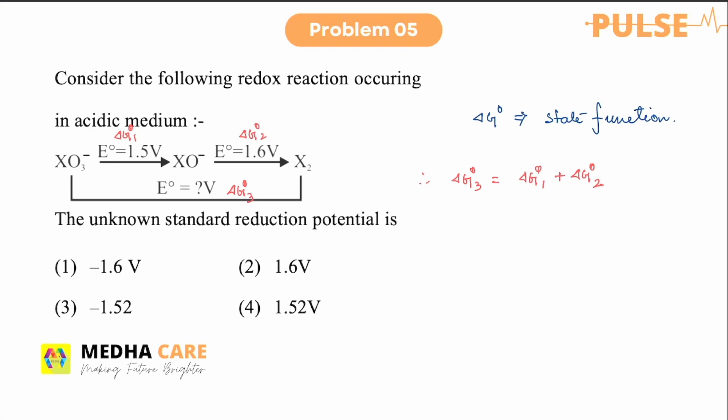So if you consider the oxidation states, so here oxidation state is plus five, here oxidation state plus one and here zero. Now consider the n value n one will be four, n two will be one and n three here it will be five. So delta G we can write minus n three f e naught three equals minus n one f e naught one minus n two f e naught two or we can write e naught three that we have to calculate that is n one e naught one plus n two e naught two divided by n three.